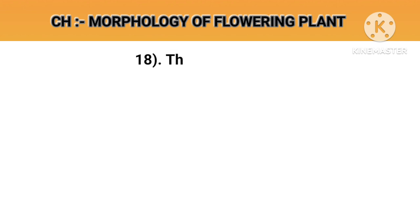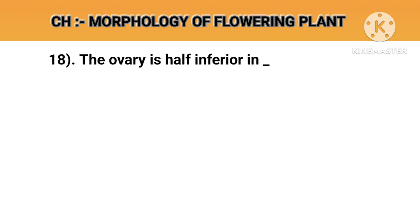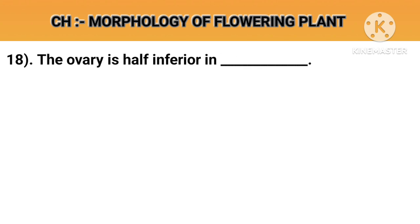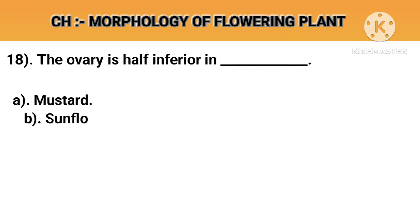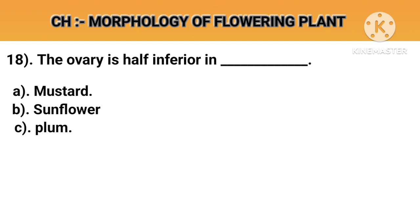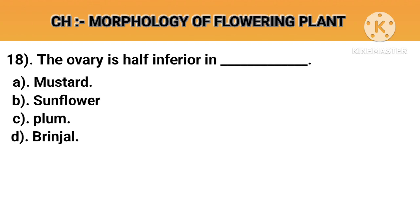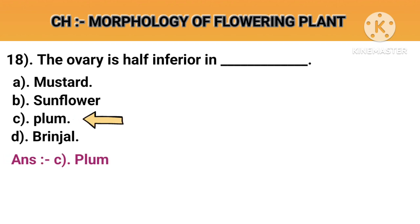Question number 18. The ovary is half inferior in. Option A: Mustard. Option B: Sunflower. Option C: Plum. Option D: Brinjal. Answer C: Plum.